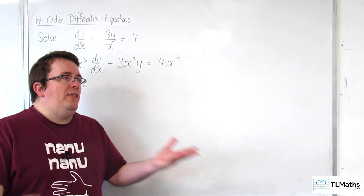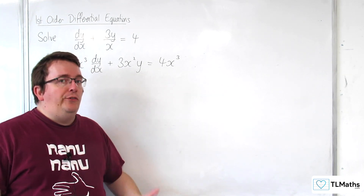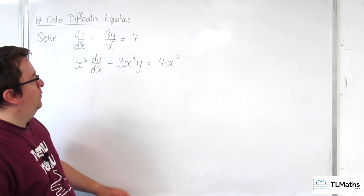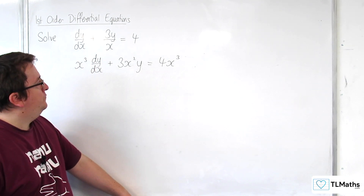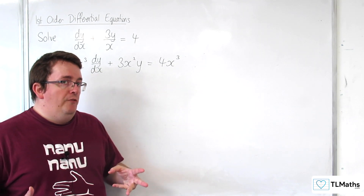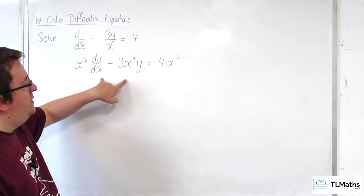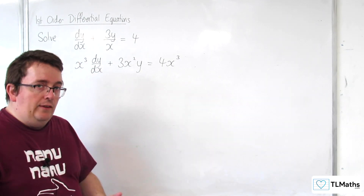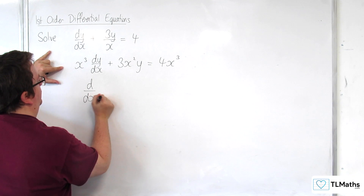You might be wondering where that x cubed comes from. Well, that's going to be a whole part of how we solve these differential equations in general, so hold on to that question because I will show you how we come up with that soon. The point is that we've multiplied through by some function of x such that now the left-hand side is a perfect derivative. It might not be immediately obvious at the outset, but you do get used to it.